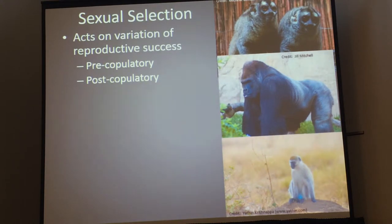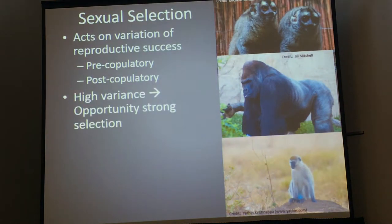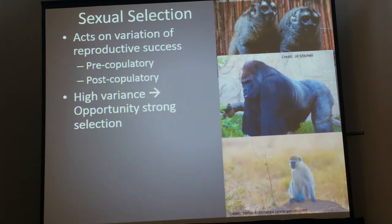Whereas in post-copulatory systems, individuals can't really sequester females, so they're multi-male, multi-female, and instead they have to rely on out-competing their mates after copulation, which is usually shown by having larger testes size. So the more variation you have among individuals in their ability to acquire mates or reproduce successfully, the greater the opportunity for strong sexual selection.